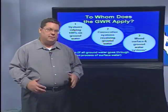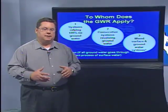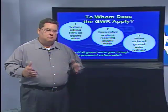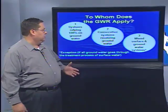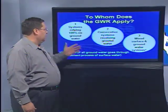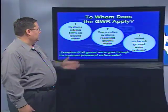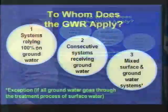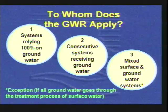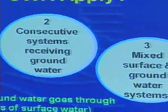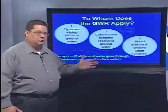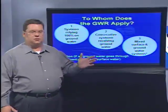Another big question we get almost on a daily basis is: does this Groundwater Rule apply to me? Here we have an illustration of the three basic things to consider. Number one is systems that rely on 100% groundwater. Also consecutive systems receiving groundwater. And also mixed surface and groundwater systems. The exception is if the groundwater goes through treatment to surface water standards.